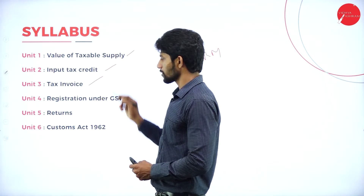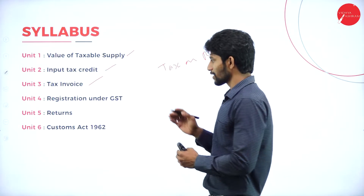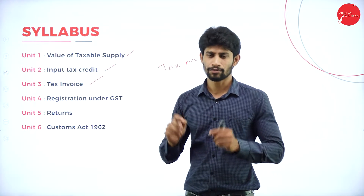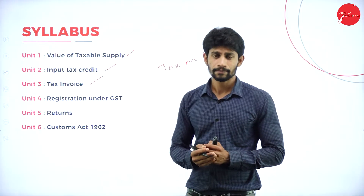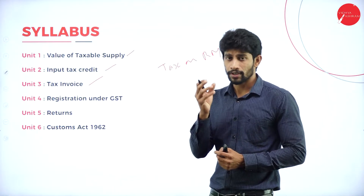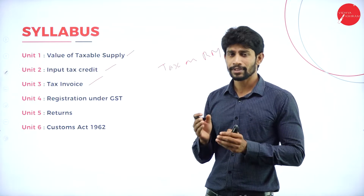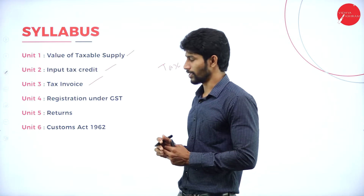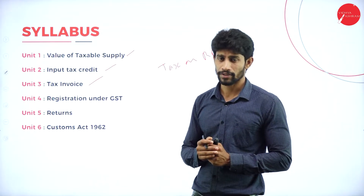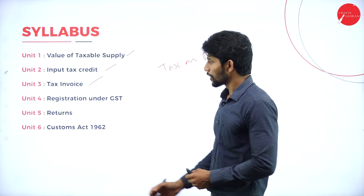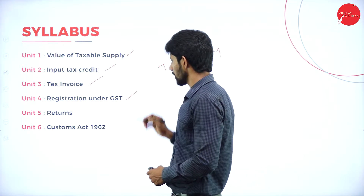Unit 3 is all about tax invoice with reference to GST. A tax invoice is like a receipt or a bill containing details of the seller, the buyer, the cost of the product, and the tax payable. Under GST, there are specific rules and regulations for generating a tax invoice.